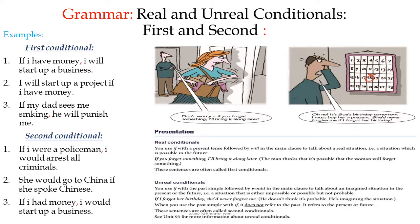Notice that the example 'If I had money, I would start up a business' uses the same idea as the first conditional example, but here we use it for the second conditional. 'Had' is the verb 'to have' in the simple past. The form is: if + simple past + comma + would + verb in the infinitive — in this case, 'start up.'